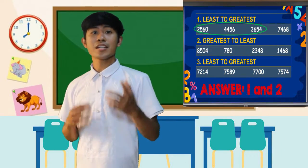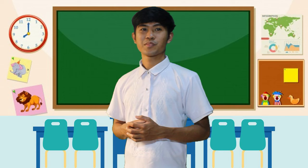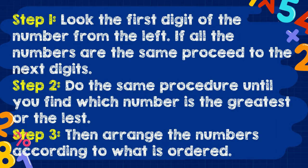Let's arrange the first three digits from number 1 in our last activity. Remember these following steps. Step 1: Look at the first digit of each number from the left. If all the numbers are the same, proceed to the next digits. Step 2: Do the same procedure until you find which number is greater or lesser. Step 3: Then arrange the numbers according to the required order.